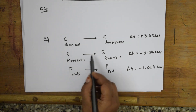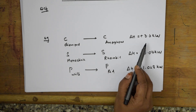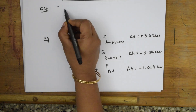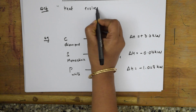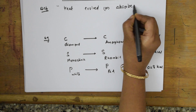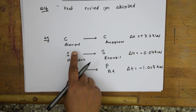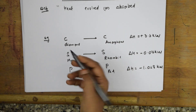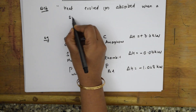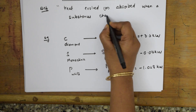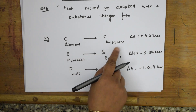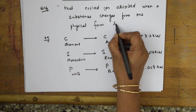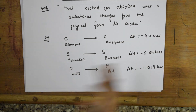From these examples, we can define heat of transition: it is the heat evolved or absorbed when a substance changes from one physical form to another — specifically, from one allotropic form to another. That is the definition of heat of transition.